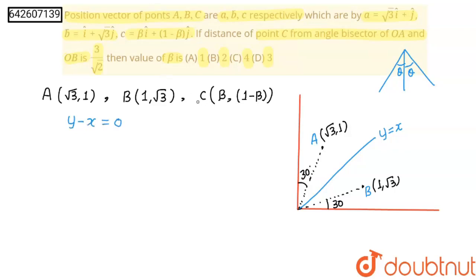Now, I will find distance of this point C from this line. So, d will be equal to modulus |(1 - β) - β| upon √2 equals 3 upon √2.